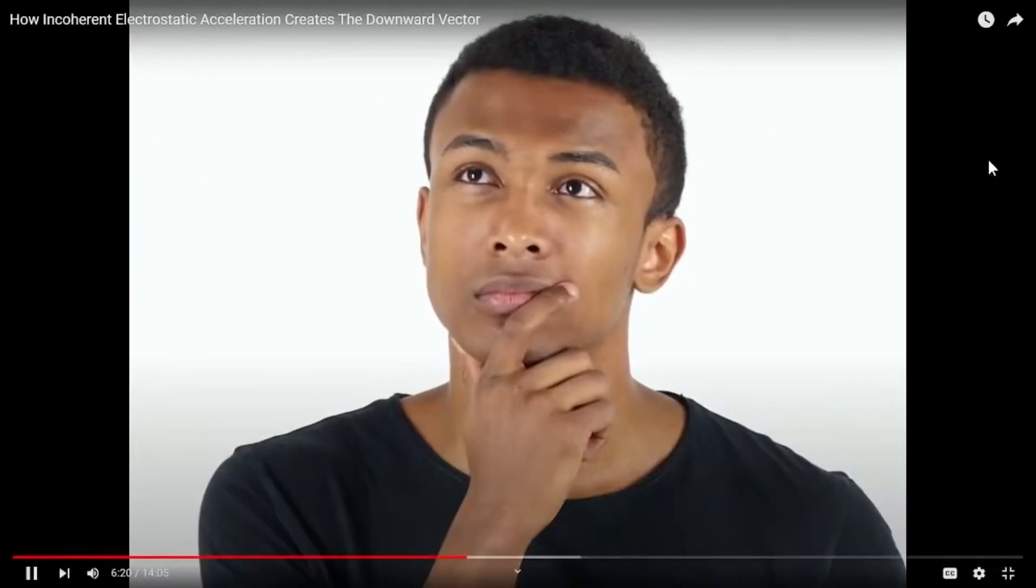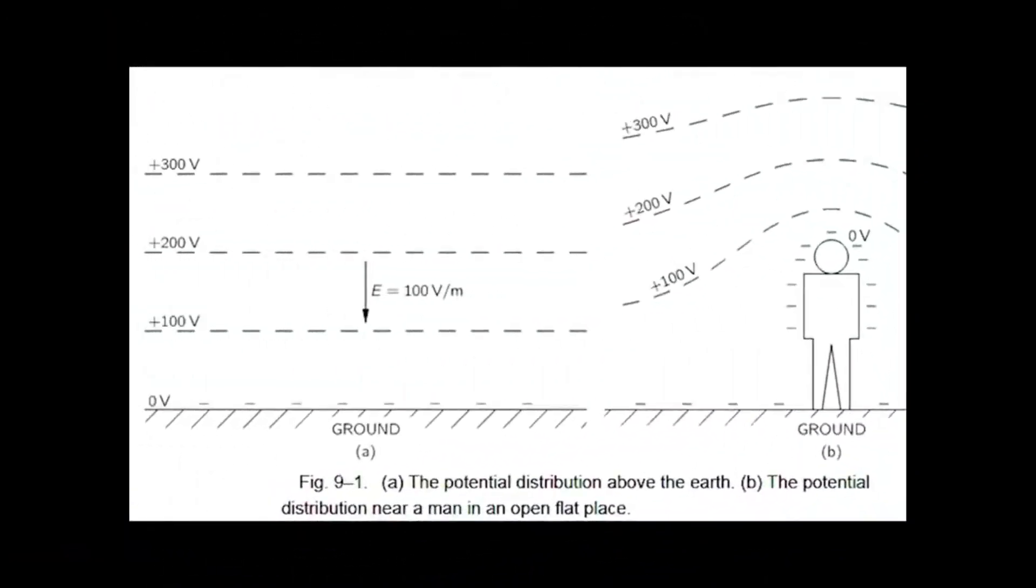One might think that the attraction from above and below would cancel out completely, but it is the electrostatic gradient that creates a flow from the positive above to the negative below.